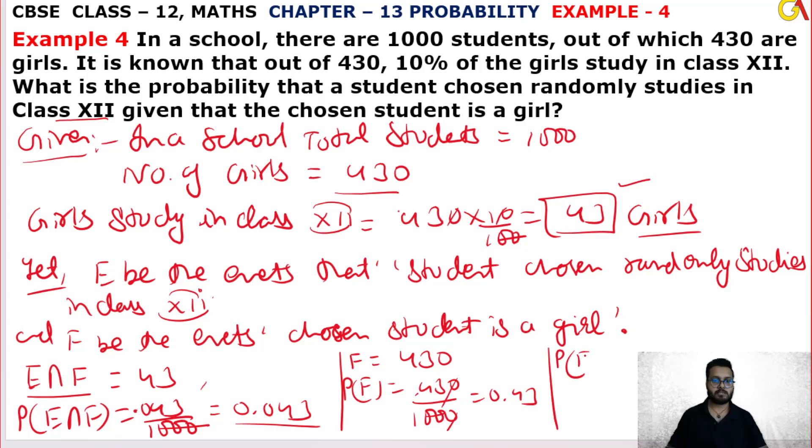Now what we need to find is P(E|F), which is E intersection F upon P(F). This will be 0.043 divided by 0.43.